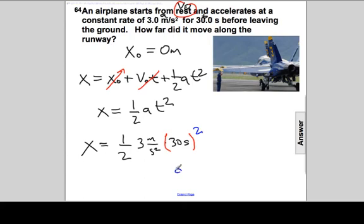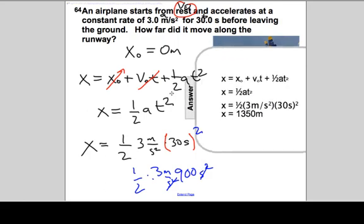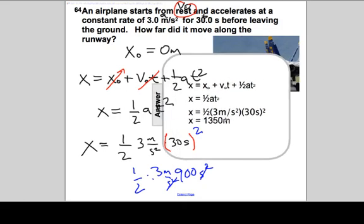We can't forget to square the time. 1/2 a times t squared. So 30 squared will end up being 900. That's 30 times 30. Second squared are seconds times seconds times 3 meters per second squared times 1/2. So if we do 1/2 times 3 times 900 and meters per second squared times second squared, second squared will cancel. And when we reveal the answer, the displacement is 1,350 meters.